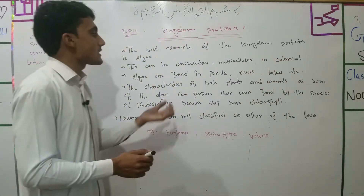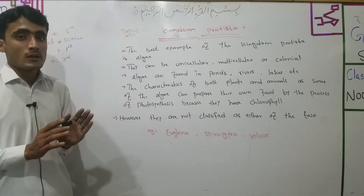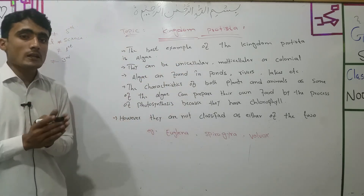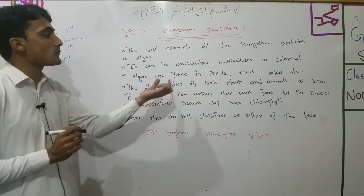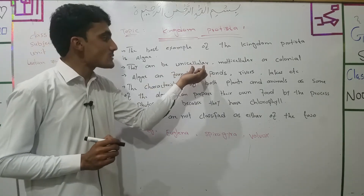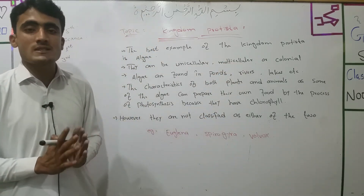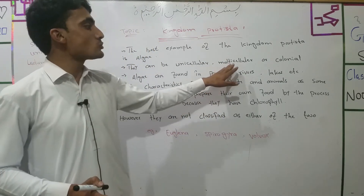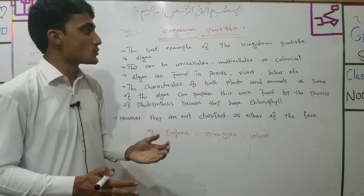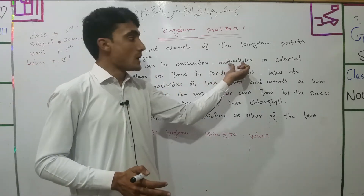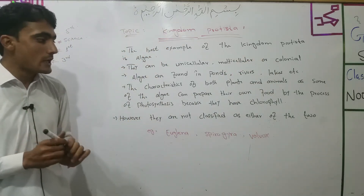Unicellular means one cell — 'uni' means one and 'cellular' means cell, so the organism has only one cell. Multicellular means many cells — 'multi' means many and 'cellular' means cell, so the organism has many cells.